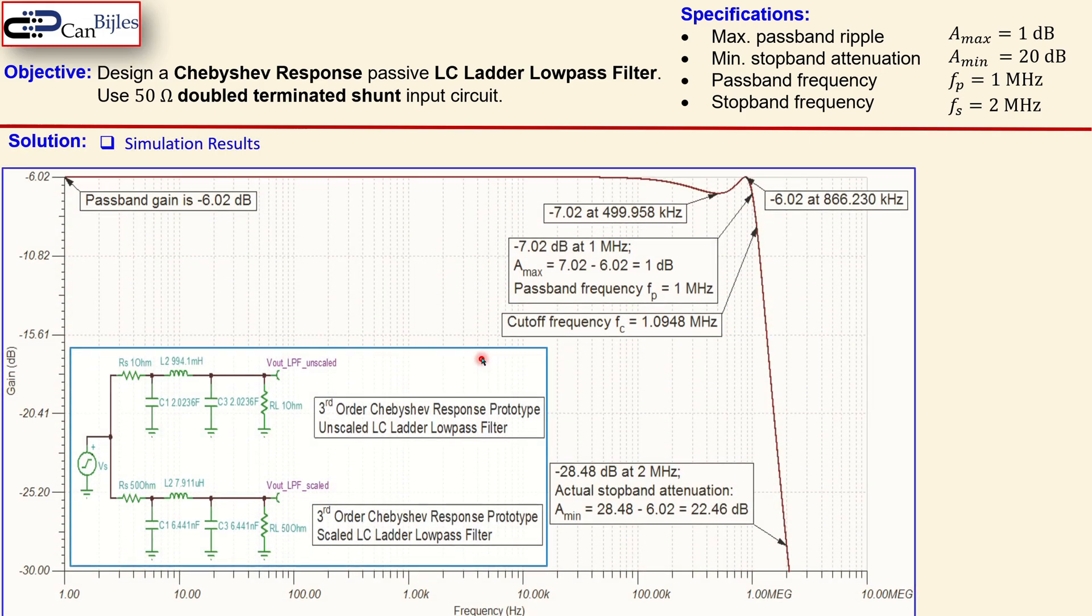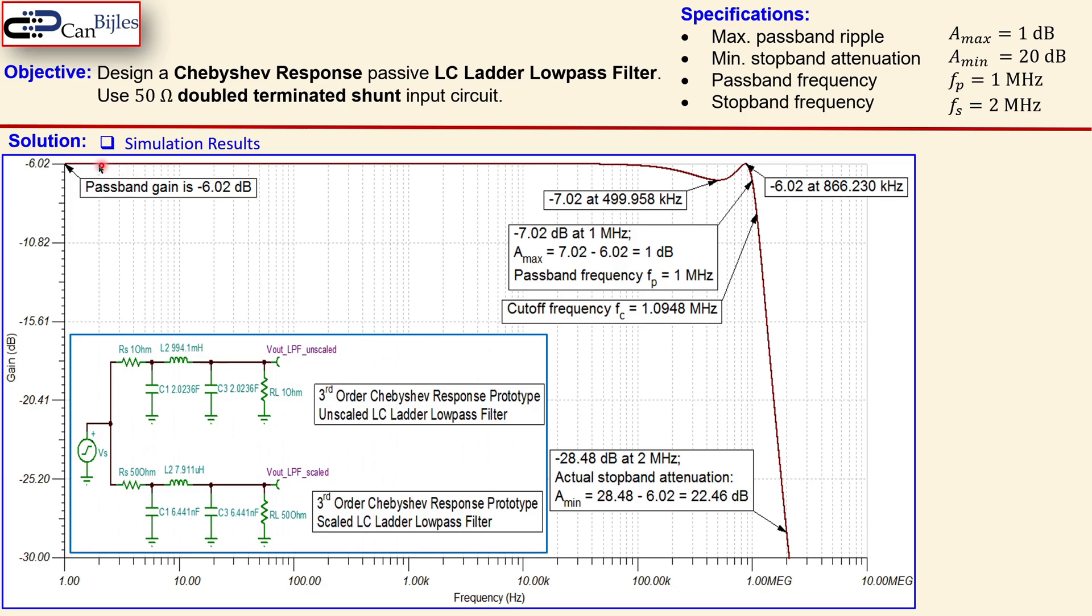So the simulation results, this is now again a Bode plot for the gain. You see the passband gain of minus 6.02 dB again. This is the circuit. Let's go through the specifications one by one. So passband gain is minus 6.02 dB. Why? Because at DC you have this is an open circuit capacitor and this inductor is short so you actually get RL over RS plus RL which is 50 over 100 so you get actually a gain of 0.5 and 20 log of 0.5 is minus 6.02 dB.